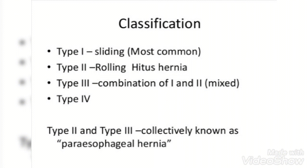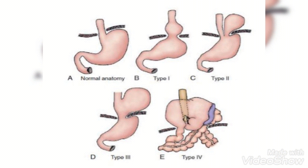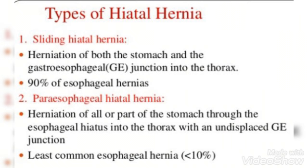Classification: This condition is classified into four categories. First is sliding hernia, second is rolling hiatus hernia, third is a combination of one and two, and fourth is a combination of two and three — collectively known as paraesophageal hernia. You can go through the diagrams of the types.